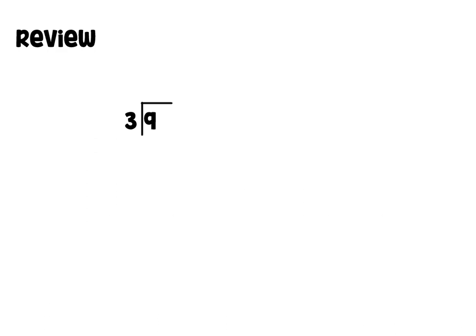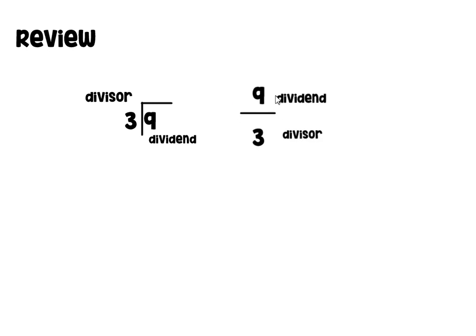Before we start, let's review. Here in this problem we have 9 divided by 3. 9 is known as our dividend and 3 is known as our divisor. Another way to show division that is going to be important for today's lesson is writing division as a fraction. So we can write 9 divided by 3 as a fraction — our dividend becomes our numerator and our divisor is our denominator.